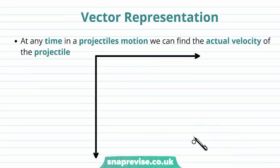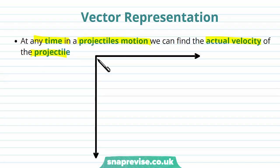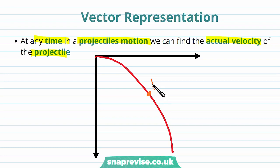So now that we know what projectile motion is and we've looked at the path, we're going to look at vector representation of projectiles. At any time in a projectile's motion, we can find the actual velocity of the projectile. If we draw in the projectile path, and we want to know the actual velocity at a point P, we're able to find this. The velocity will be acting at a tangent to this curved path.